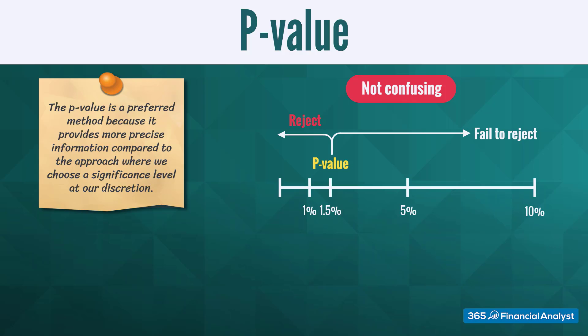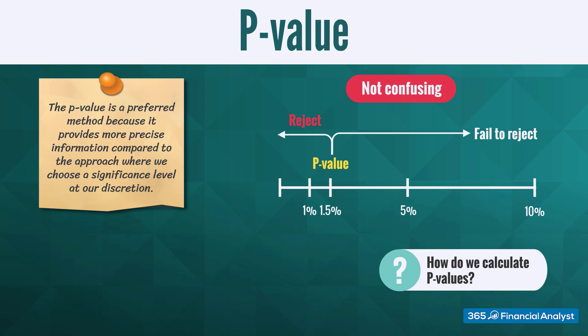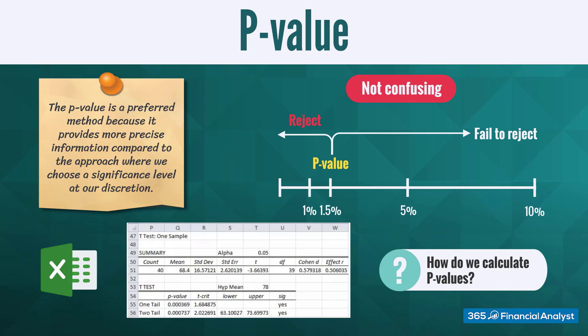So how do we calculate p-values? Most statistical software packages run tests and then provide us a series of results, one of them being the p-value. Then it is up to the researcher to decide if the variable is statistically significant or not.